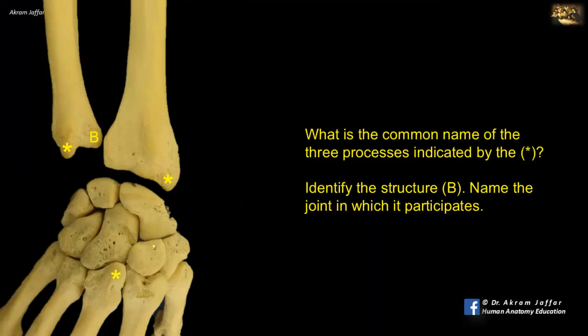What is the common name of the three processes indicated by the asterisk? Identify structure B and name the joint in which it participates. The common name of these three structures is the styloid process.